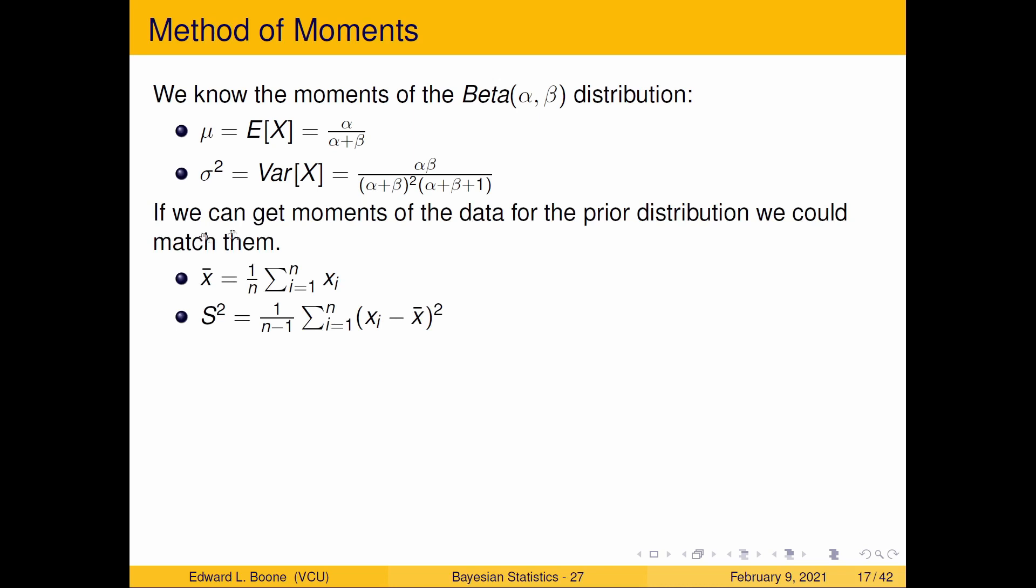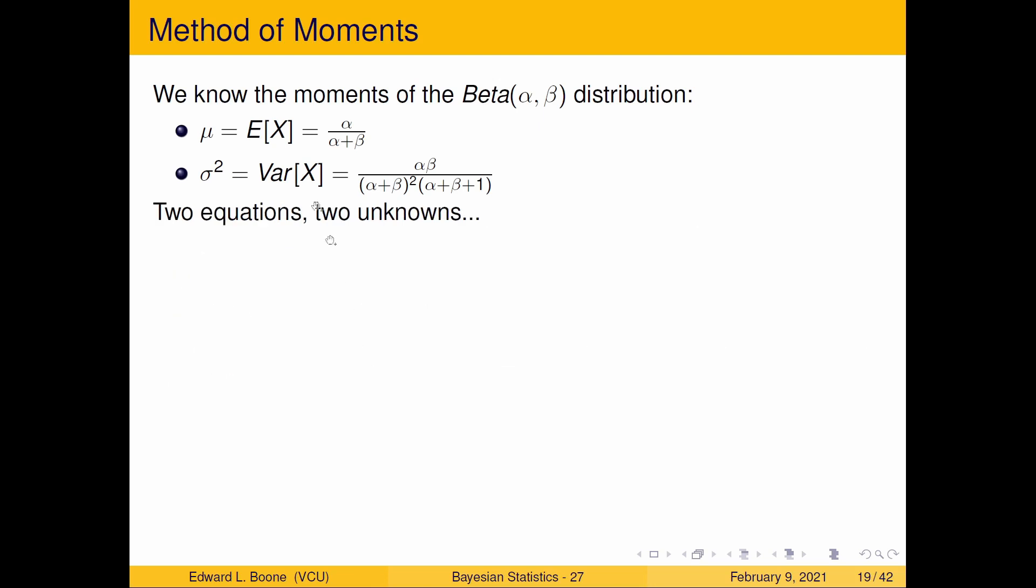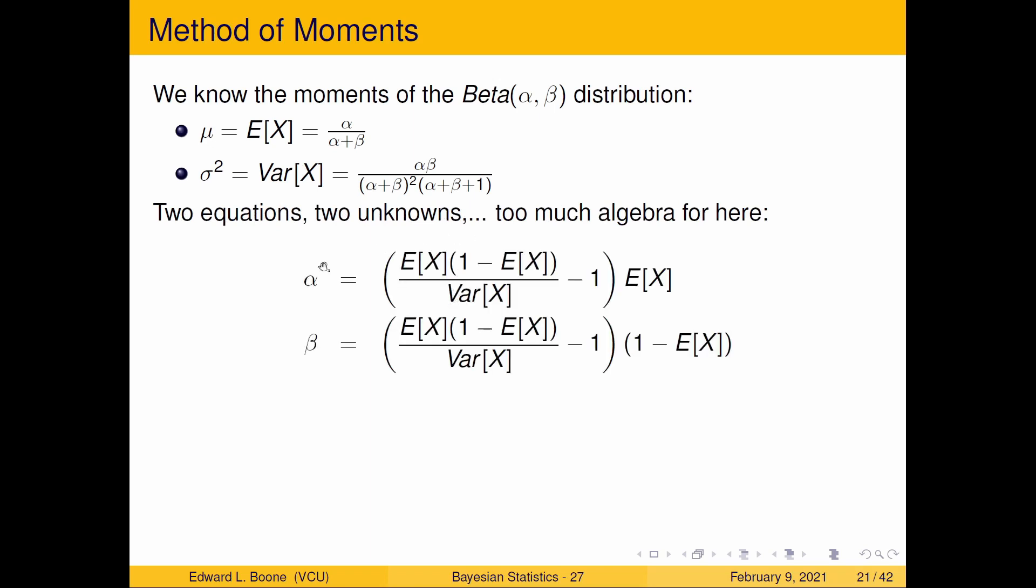So here we can get the moments from the data if we can get it. But remember, we don't have the data yet. So we'll have to find a way to get this information out of what we're given. But these are the moments. And we can then find them, find our information and find alpha and beta from there. So we have two equations, two unknowns, and I'm going to say that's too much algebra for here. So here's the answer.